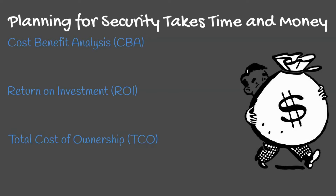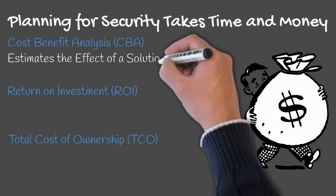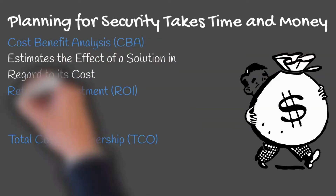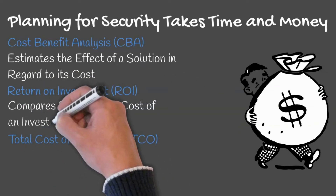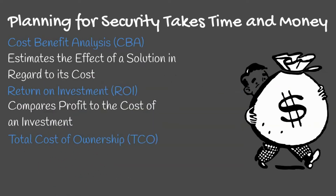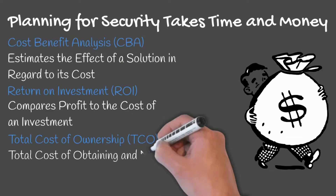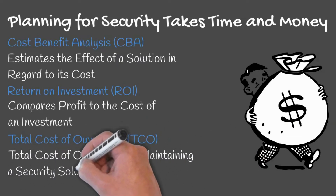A CBA estimates the effect of a solution in regards to its total cost. An ROI compares profit to the cost of an investment. In security, the return would be based upon expected risk and cost saved through mitigating these risks. TCO is the total cost of obtaining and maintaining a security solution.